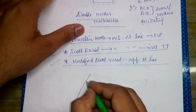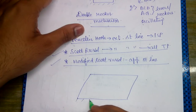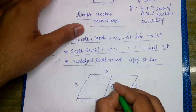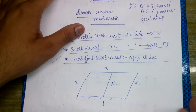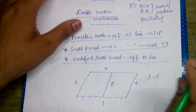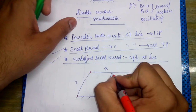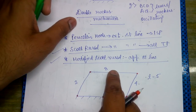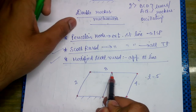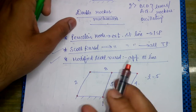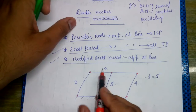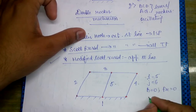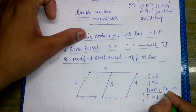Now a very important numerical that has been asked in previous years. We have links numbered 1, 2, 3, 4, and 5 — we need to find the degree of freedom. Number of links L = 5. Counting binary joints: 1, 2, 3, 4, 5, 6 — total J = 6. Higher pairs = 0, redundant constraints = 0. Therefore F = 3(L−1) − 2J = 3(4) − 2(6) = 12 − 12 = 0... using the correct formula, F = 1. Degree of freedom = 1.